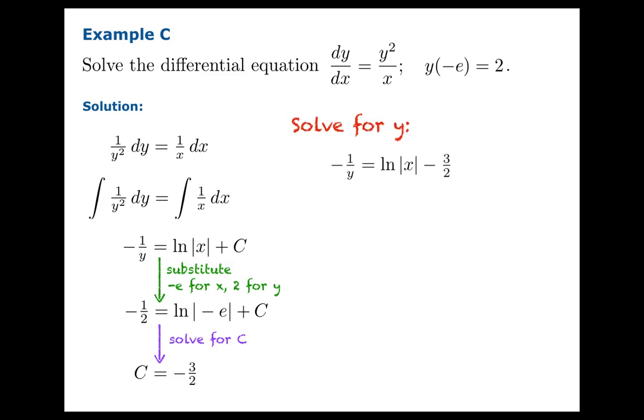Now we need to solve for y. So we're going to multiply both sides by negative 1, reciprocate. We can clean this up a little bit, multiply top and bottom by 2. We can even apply a law of logarithms to make this look a little better. So we've discovered our particular solution.